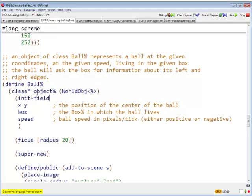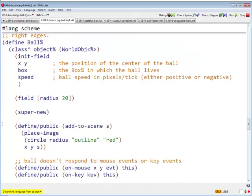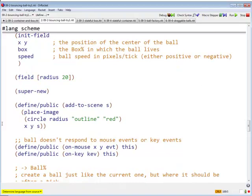So here's our ball. A ball is going to be an object that implements worldobj. It's got some init fields, x and y, which is the position of the center of the ball. It's going to have an init field box, which is the box in which the ball lives. The ball is going to have to ask the box for information about its left and right edges, so it has to know where to ask. And it's got a current speed which is going to be either positive or negative. We have another field, which is a radius field that says how big the ball is.